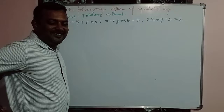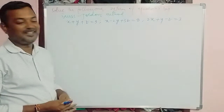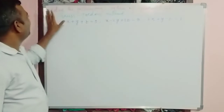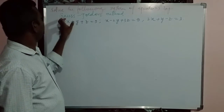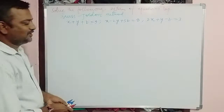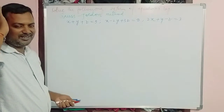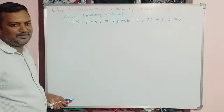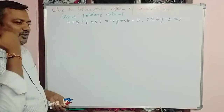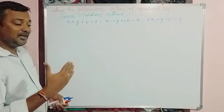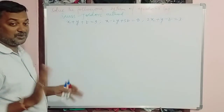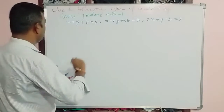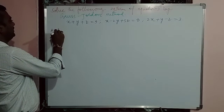Welcome back students, welcome back to my channel. In this video we are going to discuss a system of equations or simultaneous equations by using the Gauss-Jordan method. There is a slight difference between Gauss-Jordan and Gauss elimination: in Gauss-Jordan we make below the principal diagonal elements zero, and we also make above the principal diagonal elements zero in the coefficient matrix only, not in the augmented matrix. Let's start — first I am going to write the augmented matrix.